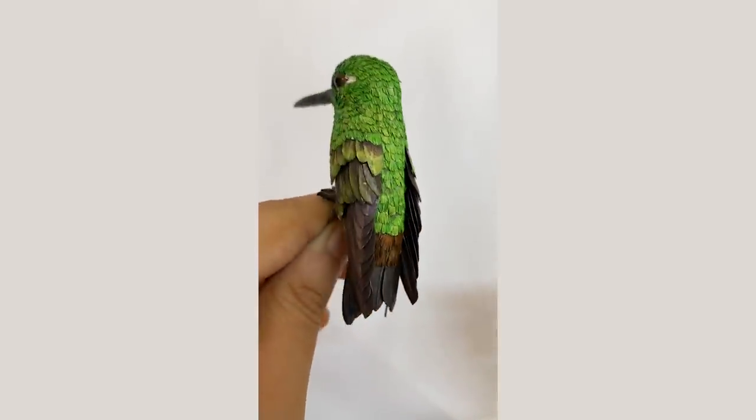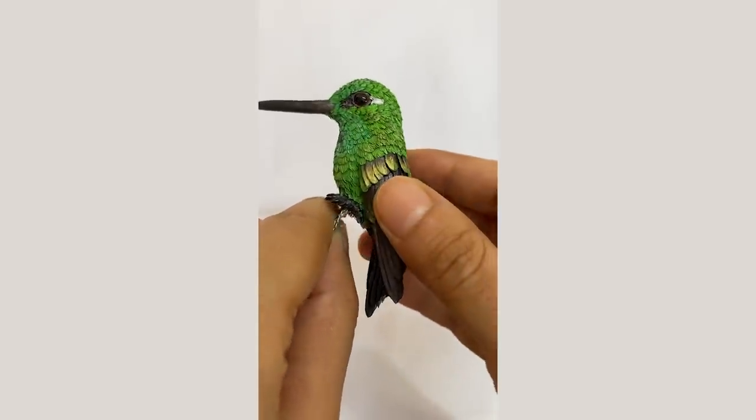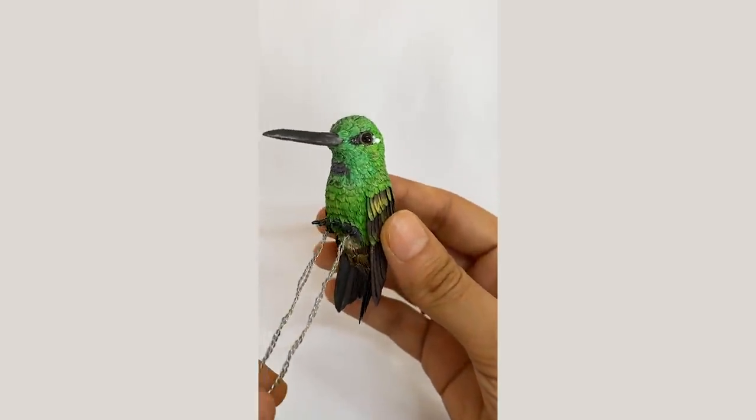So this is how a paper sculpture of a green crowned brilliant hummingbird looks like when it's all done.